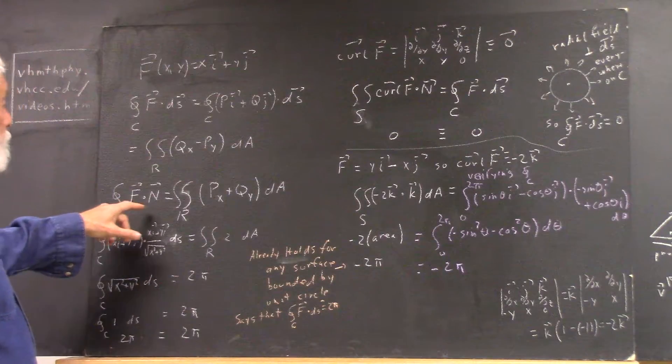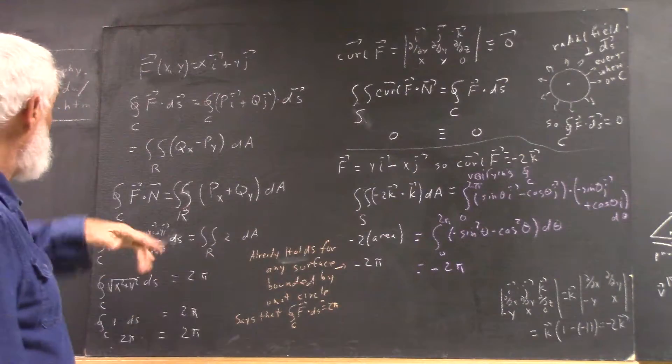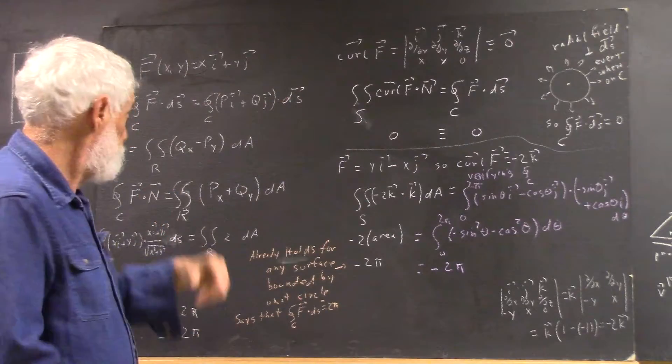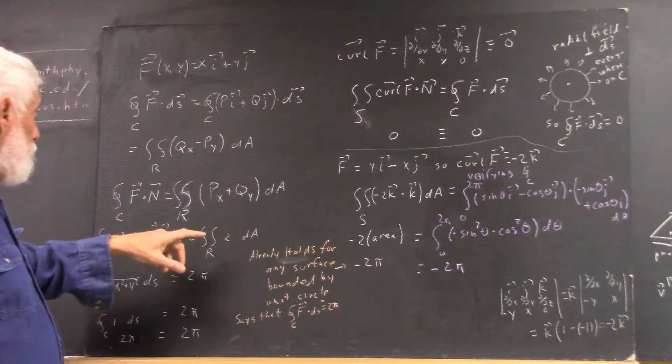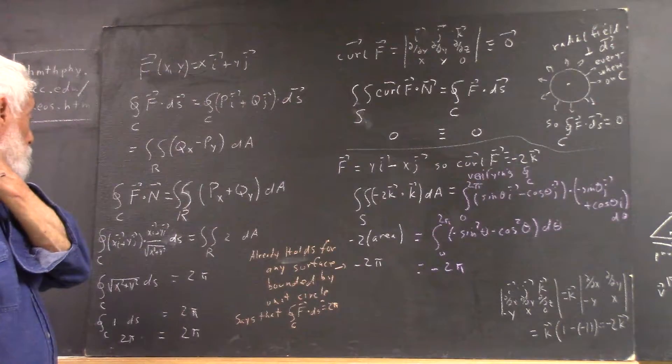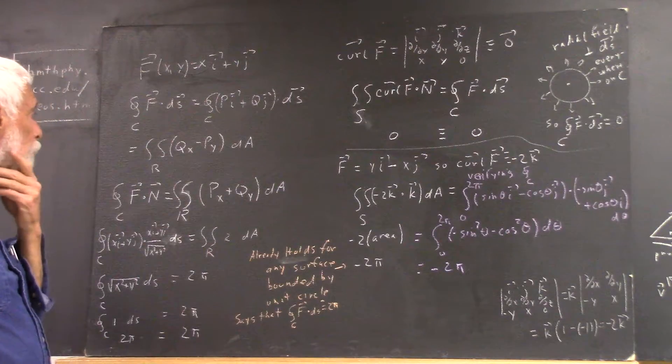The integral of f·n, where n is perpendicular to your tangent vector around a curve, is going to be the integral of px plus qy. The reasons for that are pretty straightforward.